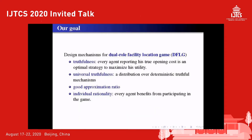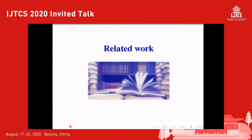Our goal is to design mechanisms for the dual role facility location game that satisfy one or more desirable properties. Usually, a mechanism is required to be truthful — that is, for every agent, reporting their true opening cost is an optimal strategy to maximize their own utility. A randomized mechanism is universally truthful if it takes a distribution of deterministic truthful mechanisms. In addition, the mechanism should have a good performance guarantee with respect to a certain system objective, and should satisfy individual rationality — that is, every agent benefits from participating in the game.